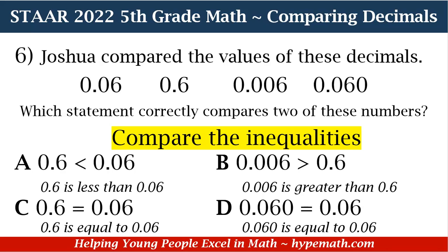B says: 0.006 is greater than 0.6. Again, looking at our place values — for the ones place, both numbers have a zero. Looking at the tenths place: 0.006 has a zero in the tenths place, and 0.6 has a six in the tenths place. The alligator mouth opens up to the largest number — so is B opening up to the largest number? Something to think about.